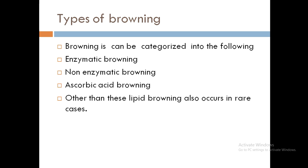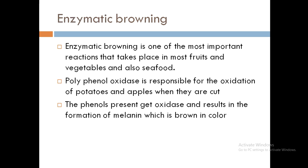Types of browning — browning can be categorized into the following: enzymatic browning, non-enzymatic browning, ascorbic acid browning, and lipid browning. So basically it's enzymatic, non-enzymatic, acid, and fat browning.